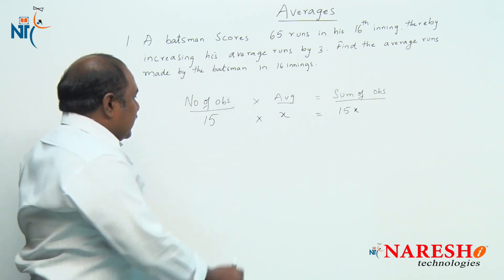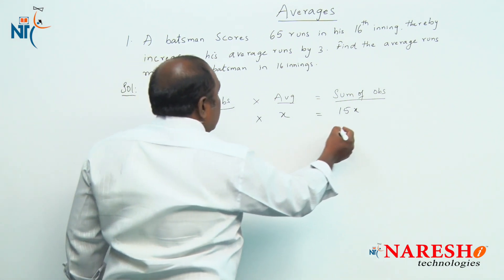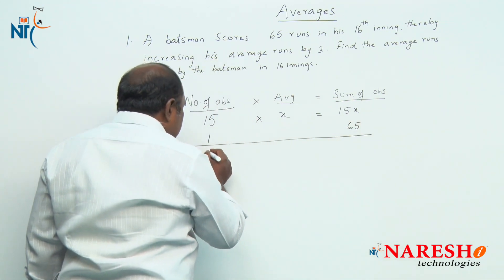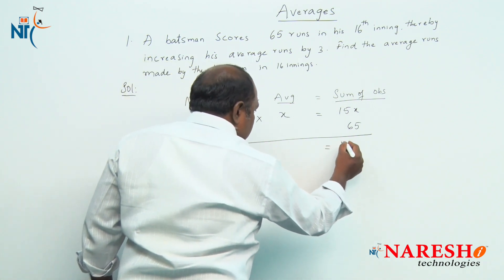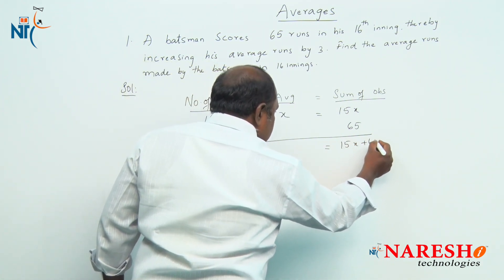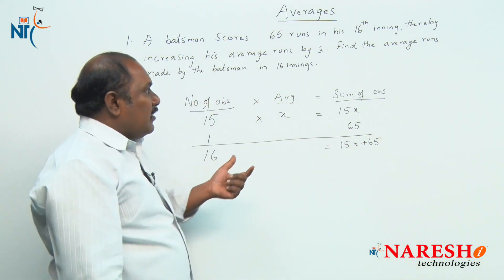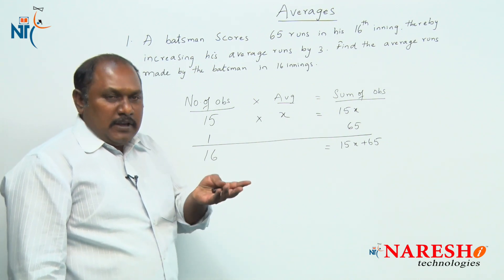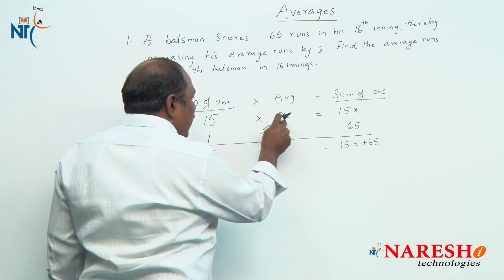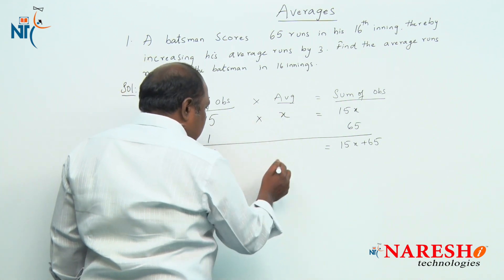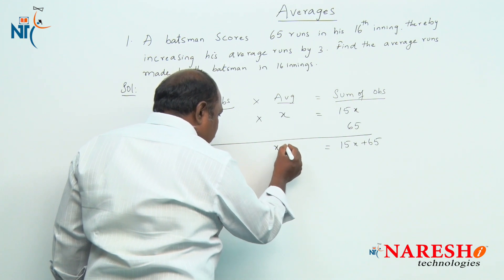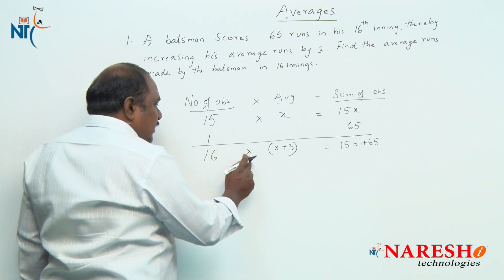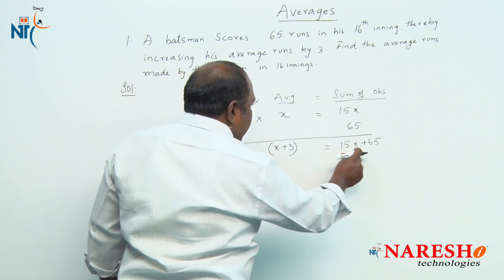Coming to the 16th inning, he scored 65 runs. So the total runs made by the batsman in 16 innings should be 15x plus 65. But in the question it is given that after playing the 16th inning the average runs increased by 3. The average before the 16th inning we have assumed as x, so the average after the 16th inning should be x plus 3. According to the formula, 16 into (x plus 3) should be equal to 15x plus 65.